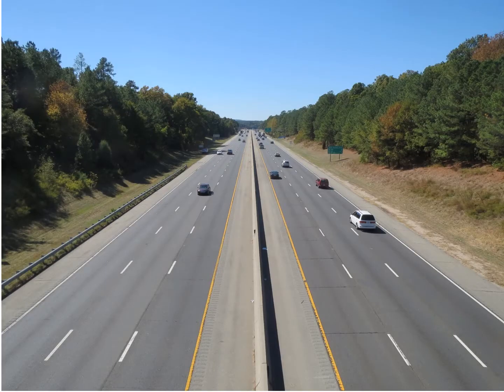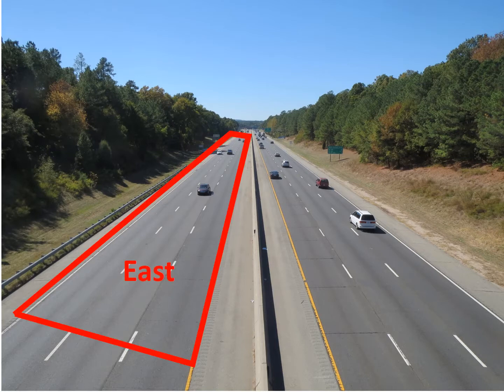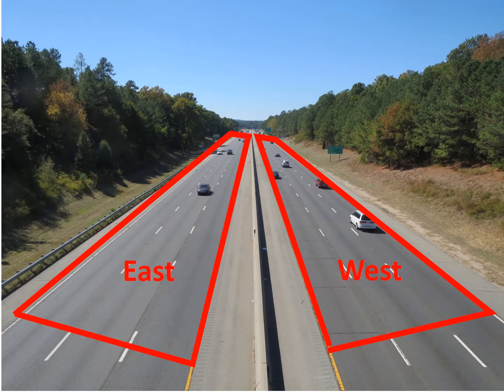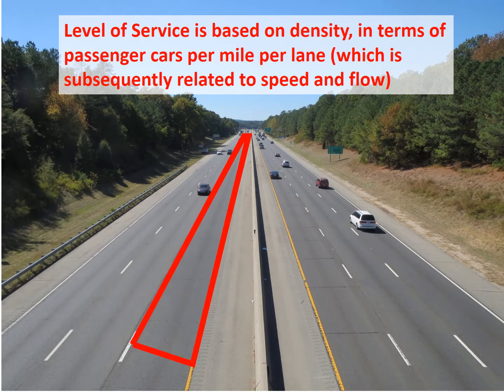In this image we see a freeway flowing freely, so this would be level of service A in both directions. One direction — east — can differ from the west direction in terms of its level of service, and again level of service is based on density in passenger cars per mile per lane.